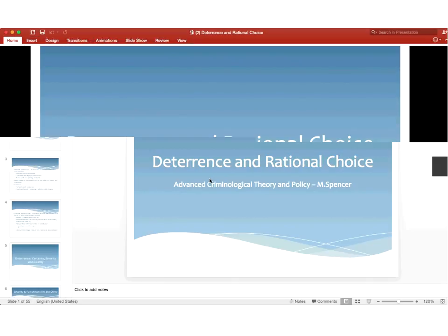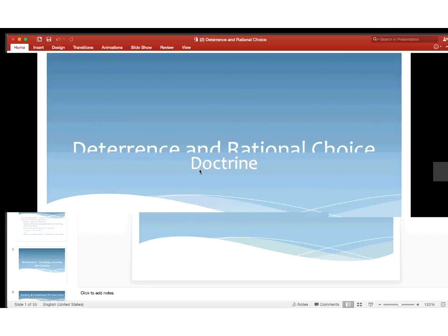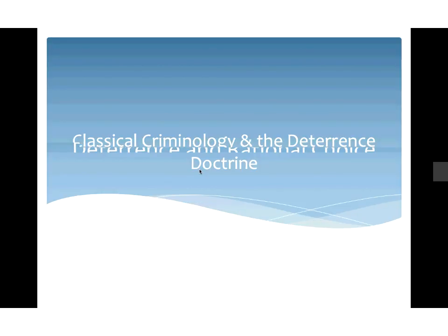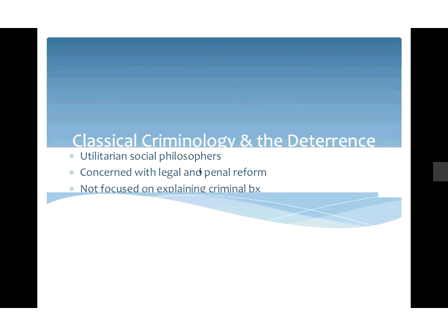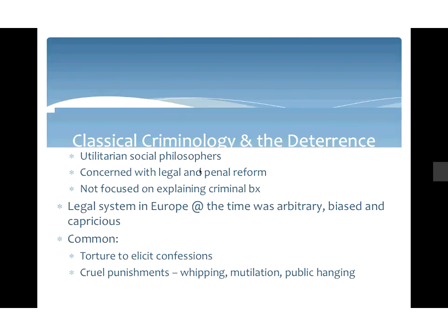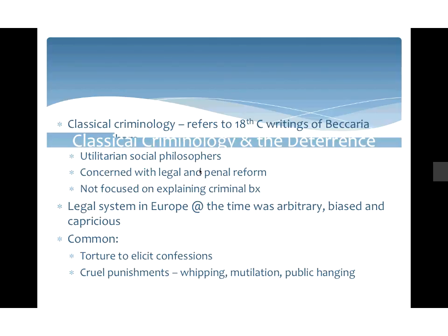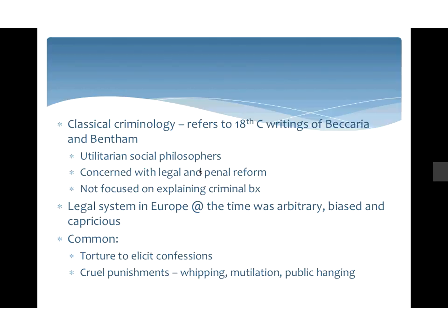Let's start with Classical Criminology and the Deterrence Doctrine. If you remember, we talked about this in class on Thursday. Beccaria is sort of the father of modern criminology, and he writes on crime and punishment. Classical Criminology refers to his writings and to the writings of Jeremy Bentham. They're both utilitarian philosophers, and their focus is not to explain criminal offending — they're concerned with legal reform and penal reform.